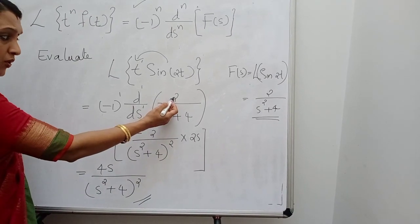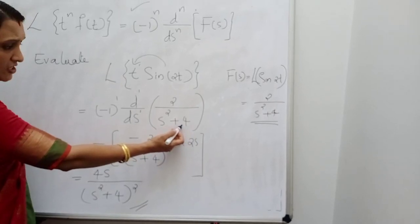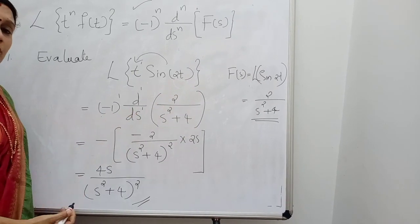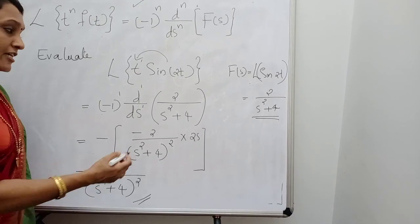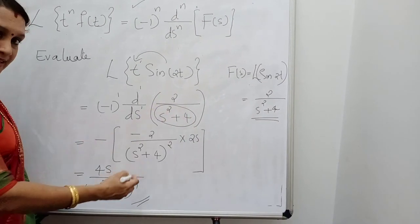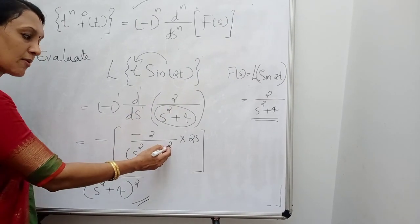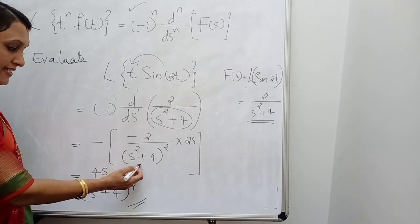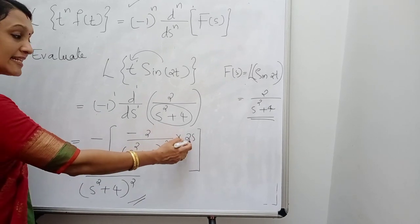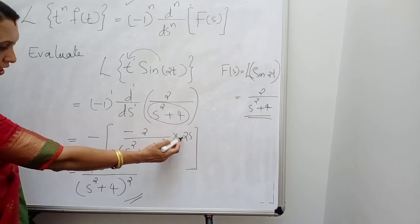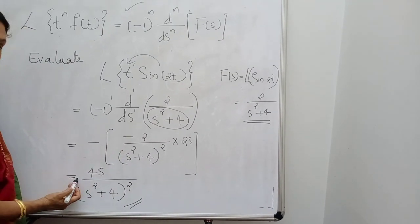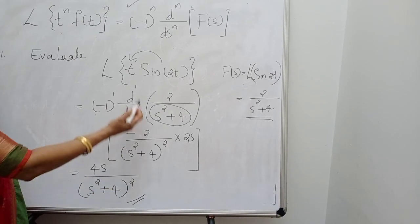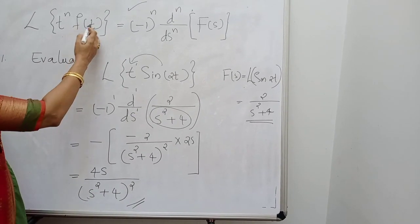Now differentiate. We have minus of 2 times the derivative of 1/(s²+4). Using the form d/dx[1/x] = -1/x², the derivative gives minus 1/(s²+4)² times 2s. So in total: minus × minus = plus, giving 4s/(s²+4)². That is the answer using the multiplication by t^n formula.